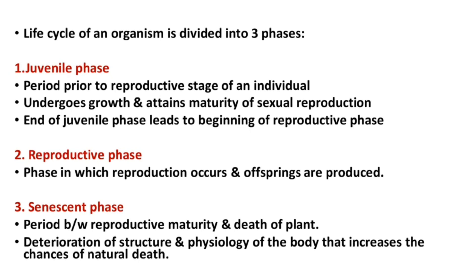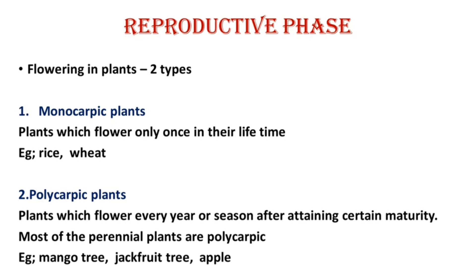In this chapter, we have to stress on the reproductive phase. Flowering plants are classified into two types: monocarpic and polycarpic plants. Monocarpic plants are those plants which flower only once in their lifetime.